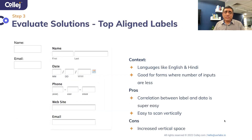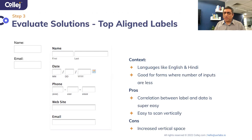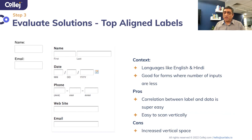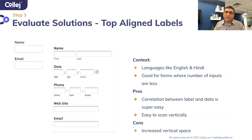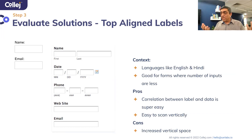Do you want top-aligned labels? The advantage is they are very easy to scan and they allow you to save horizontal space. It's also easier to scan vertically. However, the bigger problem is that top-aligned labels eat up a lot of vertical space, which will force your users to scroll more. But again, if scrolling is not a problem, that's a perfectly good solution.